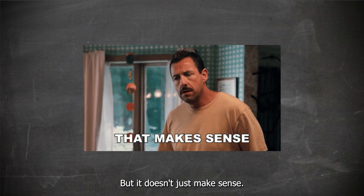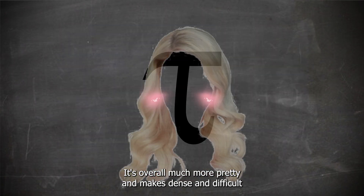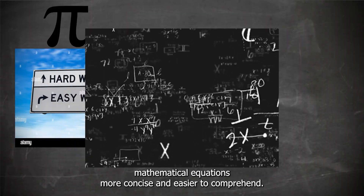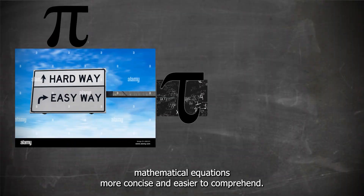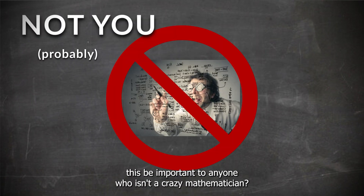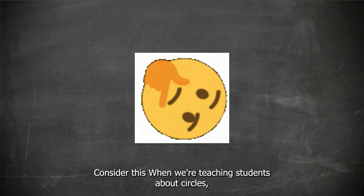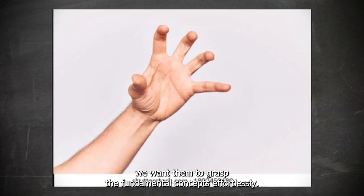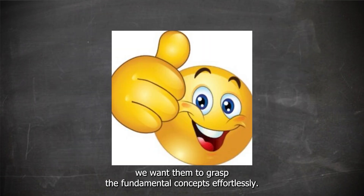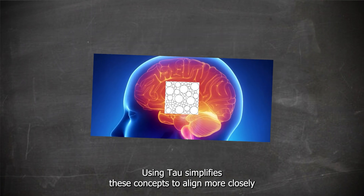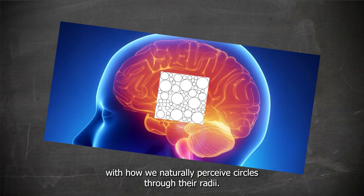But it doesn't just make sense — it's overall much more elegant and makes dense and difficult mathematical equations more concise and easier to comprehend. When we're teaching students about circles, we want them to grasp the fundamental concepts effortlessly. Using Tau simplifies these concepts to align more closely with how we naturally perceive circles through their radii.